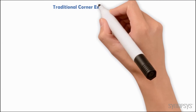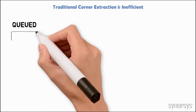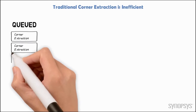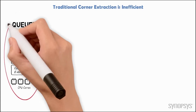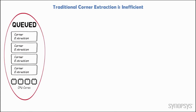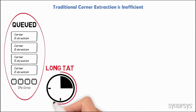Traditional corner extraction approaches are inefficient in meeting today's design requirements. A typical approach is to queue multiple extractions on fixed CPU resources set aside for the purpose. However, this results in a longer turnaround time, adding several hours before all runs are complete and available for sign-off analysis.